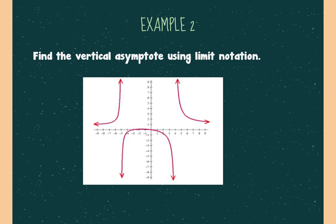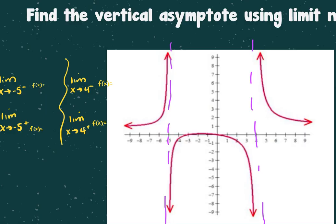You do this one: find the vertical asymptote and then use the limit notation to show what's happening with your graph. Starting with the vertical asymptote at negative five — approaching from the left, the y values keep getting bigger, so the limit is positive infinity. Approaching from the right side of the vertical asymptote, the arrow is pointing down, so it's going toward negative infinity.